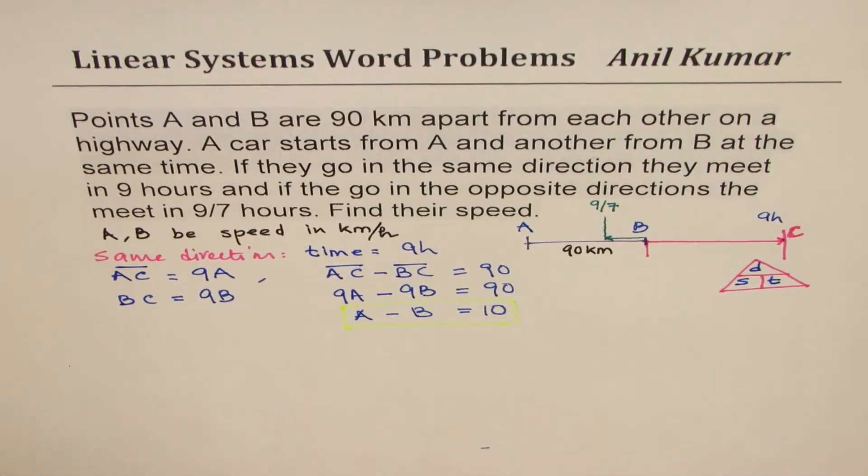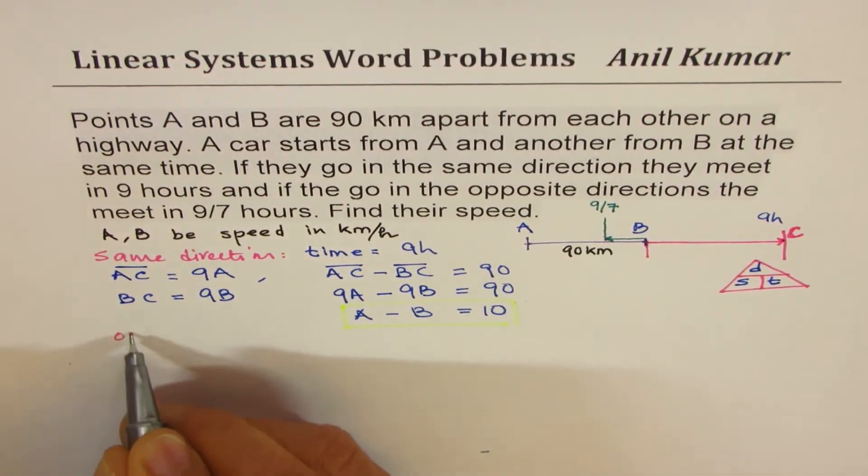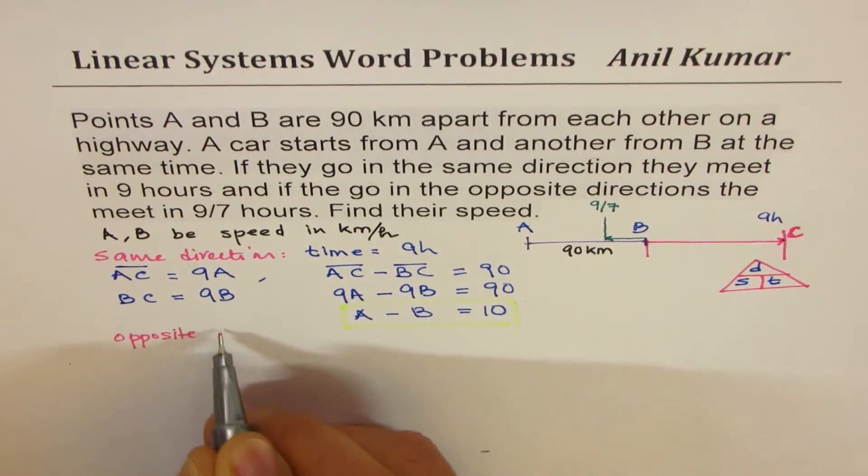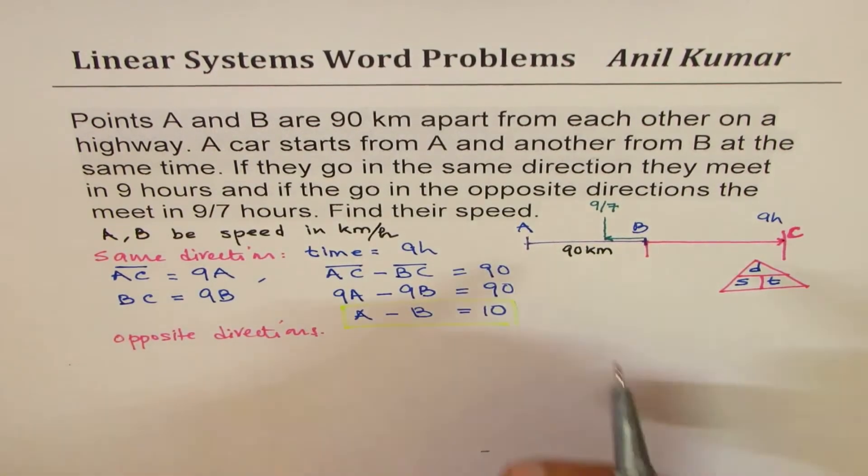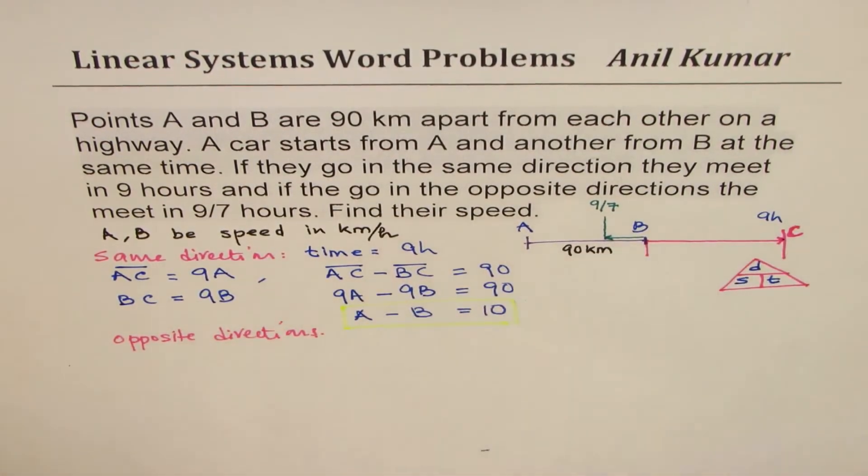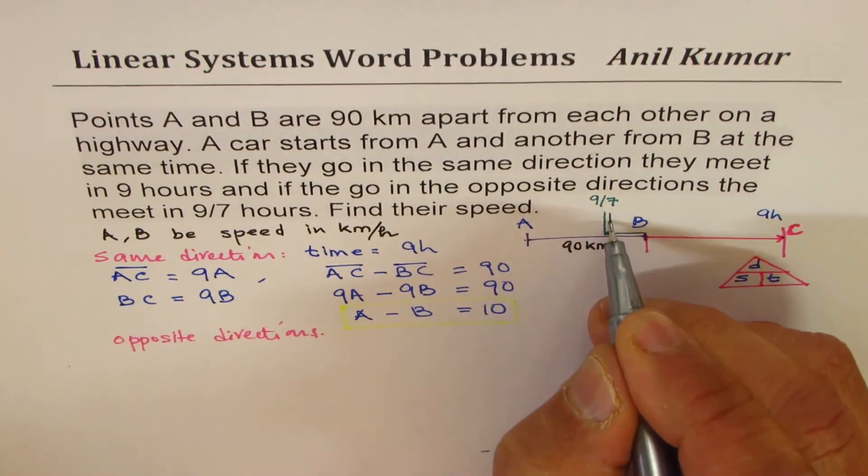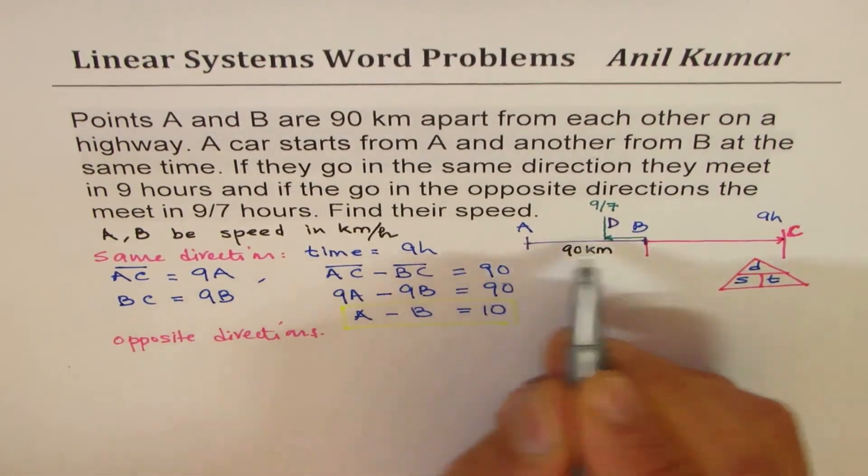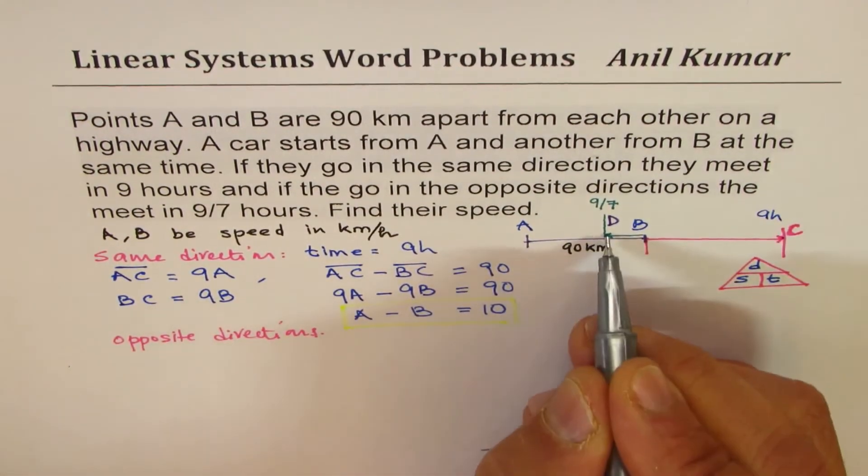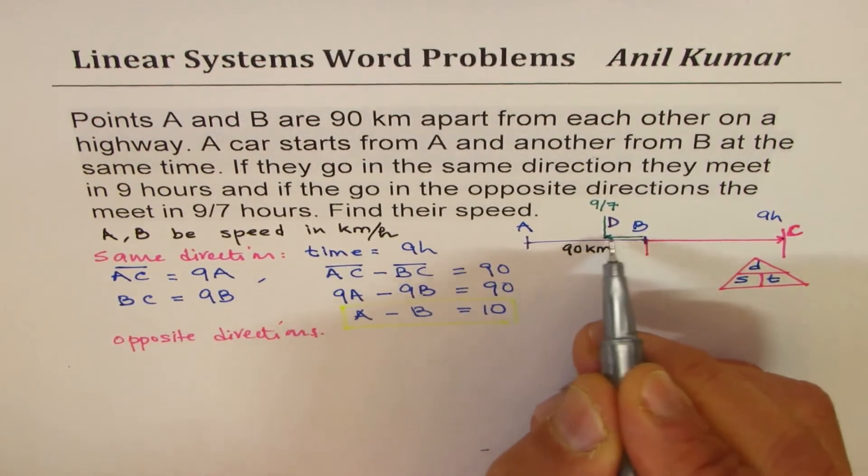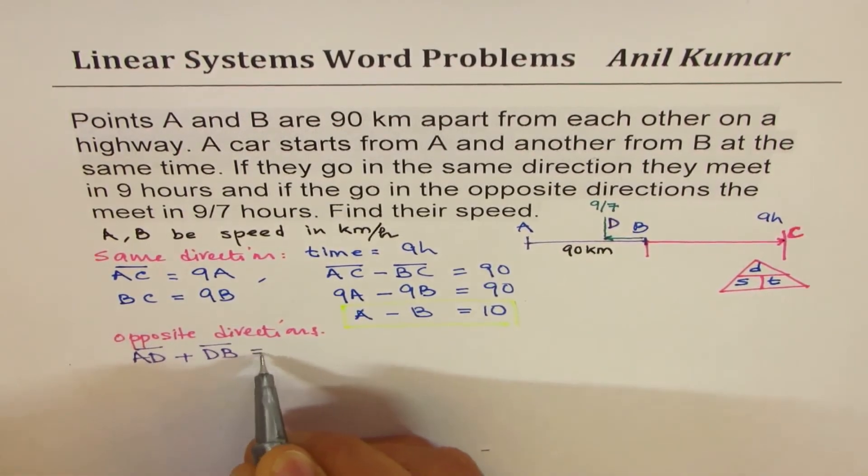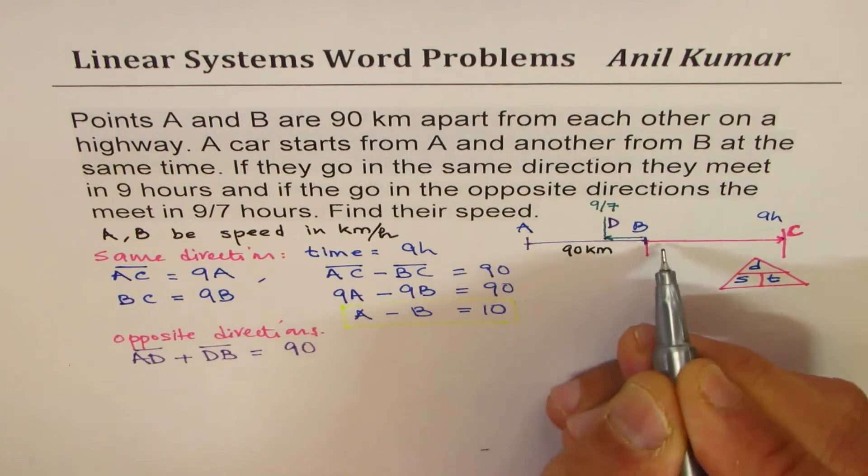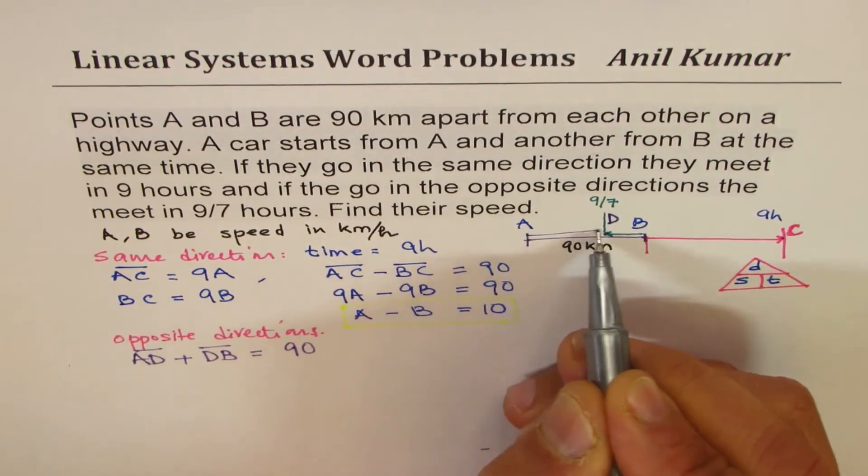Now let's analyze the second scenario, that means opposite directions. So when they're traveling, let's say they meet at a point which is D. But now you realize that AD plus DB is 90. So we know AD plus DB, we're talking about this distance, is 90. Total distance is 90. But how much is A to D?